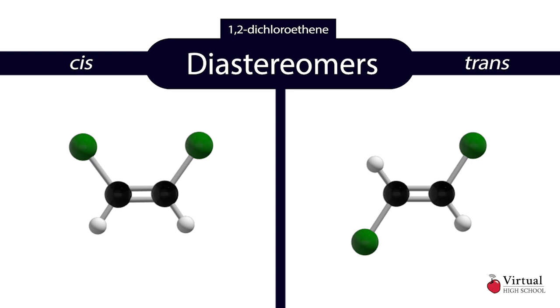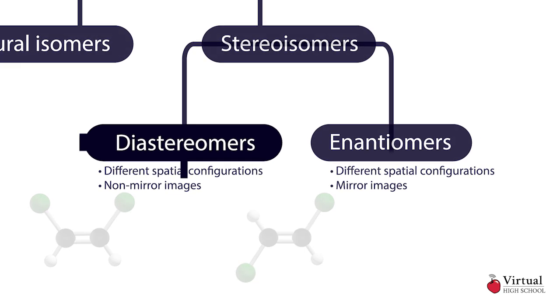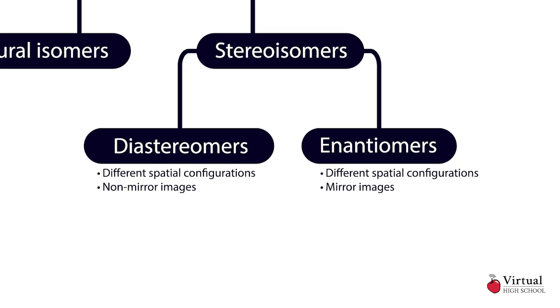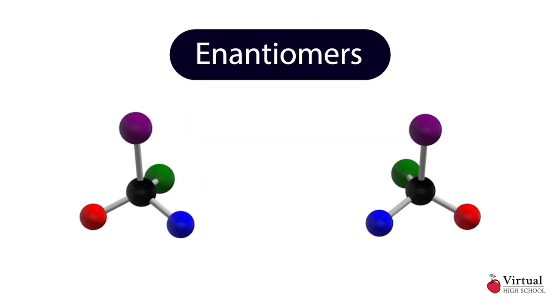Because they have such unique spatial configurations, diastereomers have differing physical and chemical properties. Conversely, enantiomers are stereoisomers that are mirror images of one another.